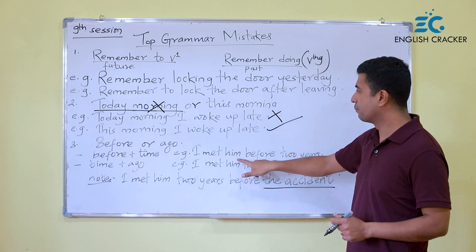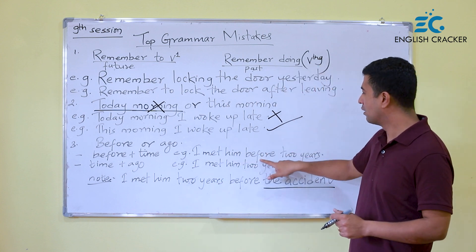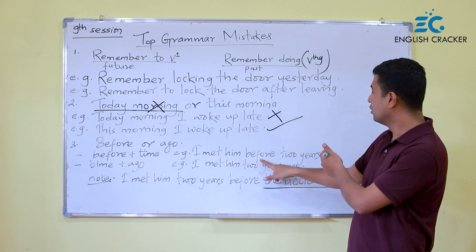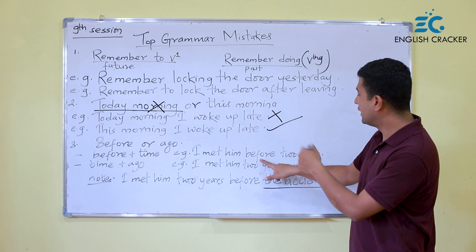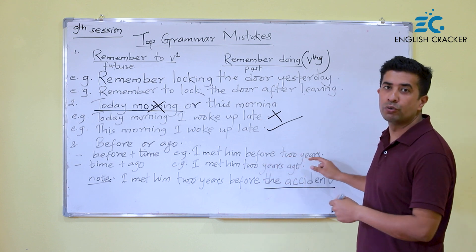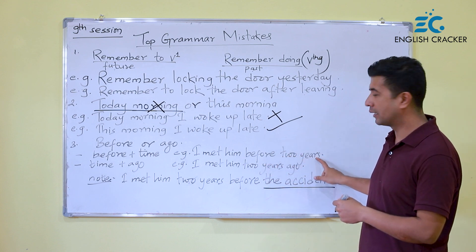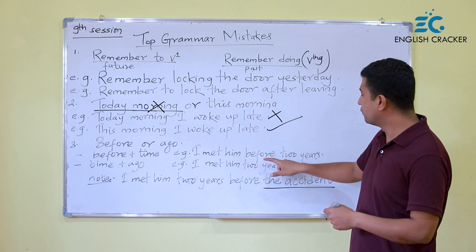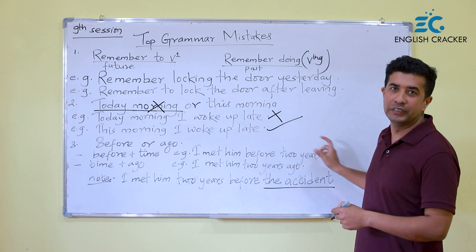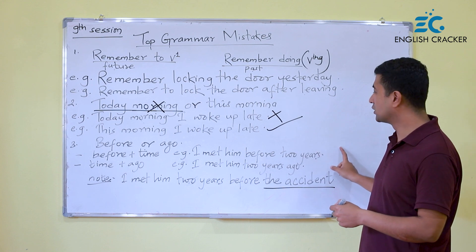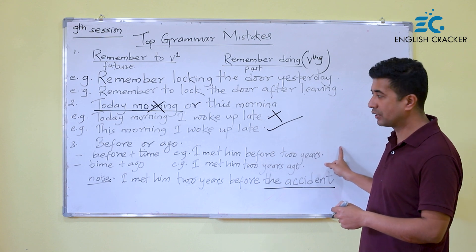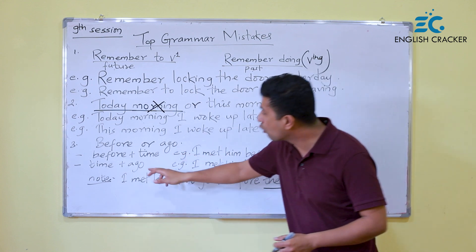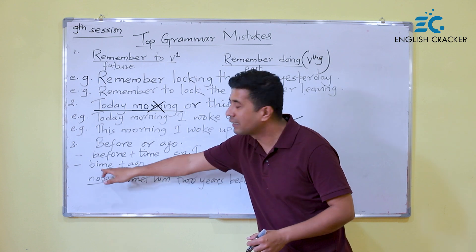For example: 'I met him before 2 years' and 'I went to Kathmandu before 2 years' are incorrect. The correct forms are: 'I met him 2 years ago' and 'I went to Kathmandu 2 years ago.' Use 'ago' when referring to a specific time duration in the past.